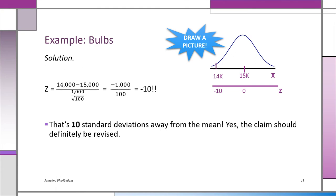Negative 10 — we don't even have a table that goes to negative 10. You're 10 standard deviations away from the mean; the probability is like one in a trillion. So I would tell the company they've got to revise their claim. The likelihood of their claim being true is incredibly small — not impossible, since the distribution goes to minus infinity, but this is super unusual. Reject the claim: we doubt your bulbs actually last 15,000 hours. It's probably closer to 14,000 hours.